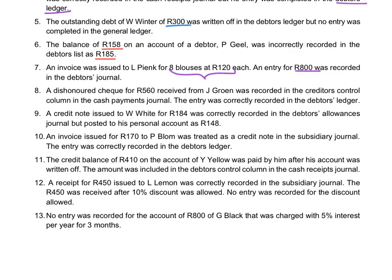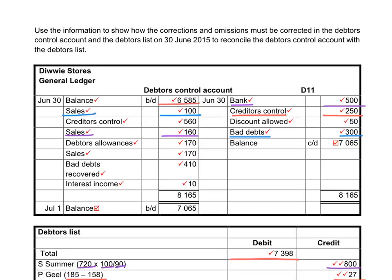A dishonoured cheque of 560 received from Jay Groon was recorded in the creditors control column in the cash payments journal. It should have been recorded in the debtors control column, because when a cheque is dishonoured the debtor owes the money to the business again. The entry was correctly recorded in the debtors ledger, so there is no mistake in the individual account. This mistake will only be corrected in the control account: we debit the debtors control with 560 to increase the amount debtors owe and credit the creditors control to correct the mistake there.